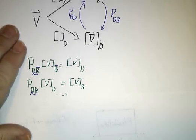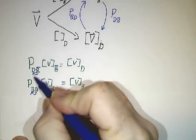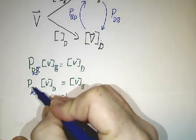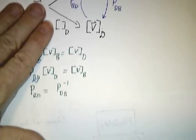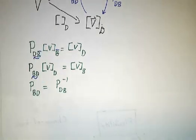Since these matrices do the opposite of each other, one undoes what the other does, those matrices have to be inverses of one another.